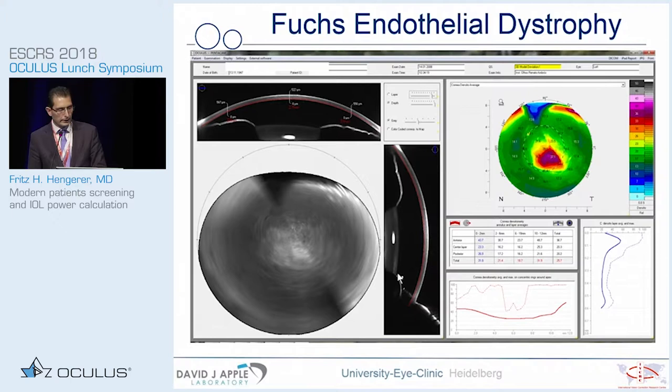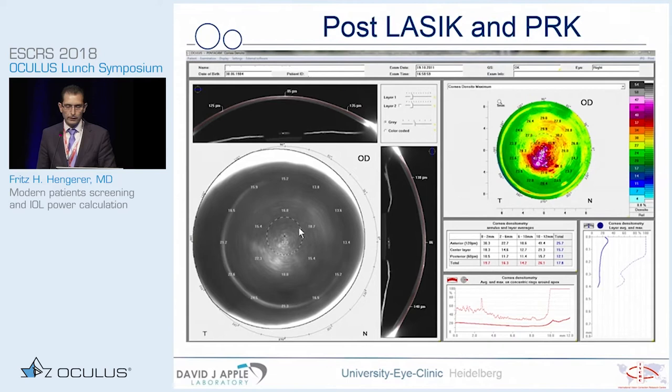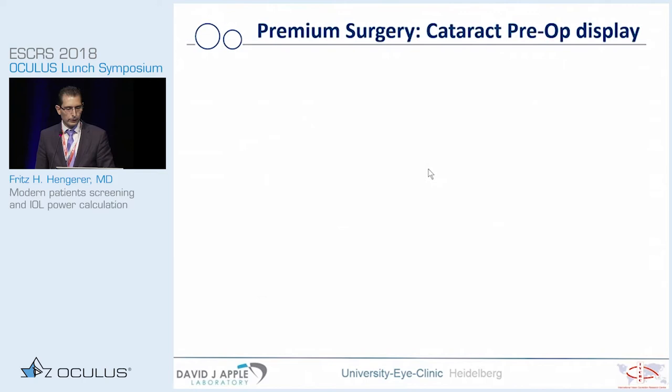You can nicely see the densitometry map evaluated by the machine in order to assess the amount of cloudiness of the cornea. And even if the patient underwent prior cataract surgery, LASIK, or other corneal refractive reshapings, you can see this clearly in the overview.